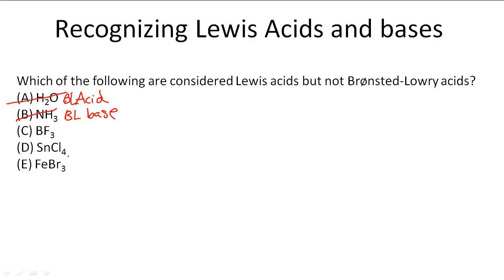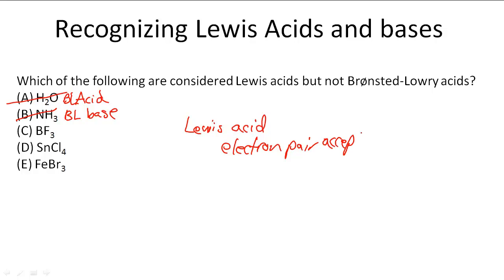Now BF3, SnCl4, and FeBr3 can all accept another electron pair. The definition of a Lewis acid is an electron pair acceptor. BF3 can accept another electron pair so it can fulfill its octet.